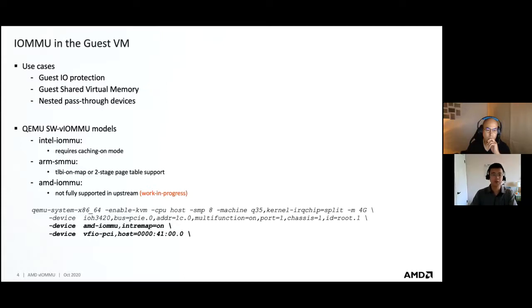Recently, we submitted a series of patches to enable this feature. To use it, it's very simple. When you start the QEMU command, you just specify the AMD IOMMU device, add the VFIO PCI host device, and attach it to the AMD IOMMU. And that should be it.